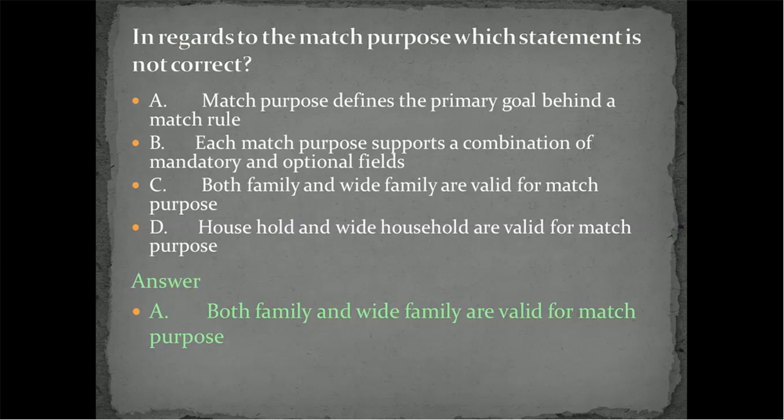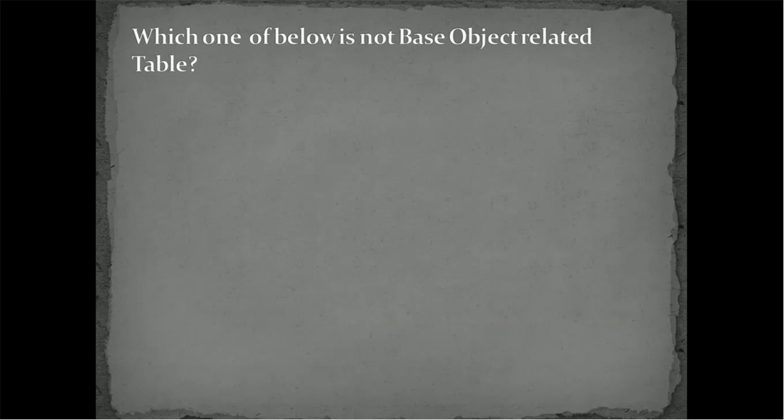Match purpose defines the primary goal behind a match rule. It's correct. But the option C, both family and wide family are valid for match purpose, this is wrong statement. Household and wide household are valid for match purpose, that is correct. So family and wide family not valid.